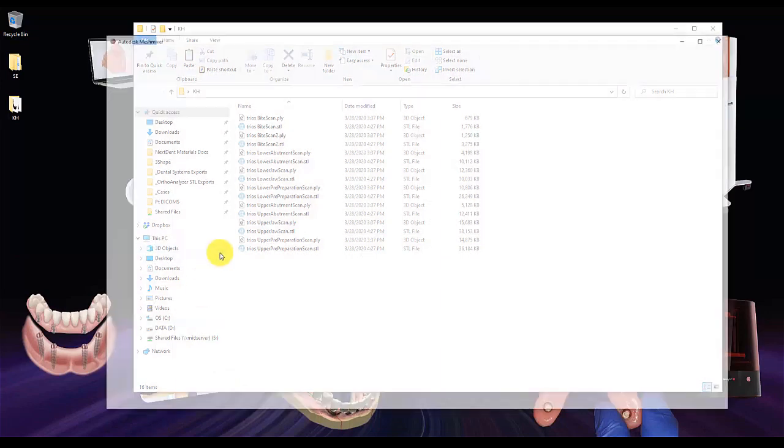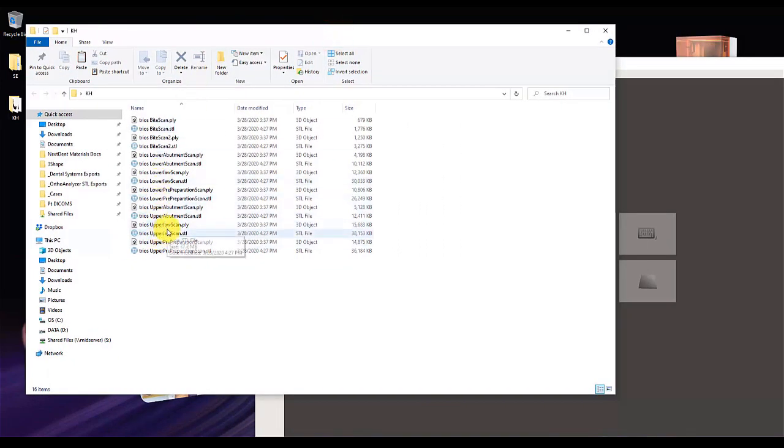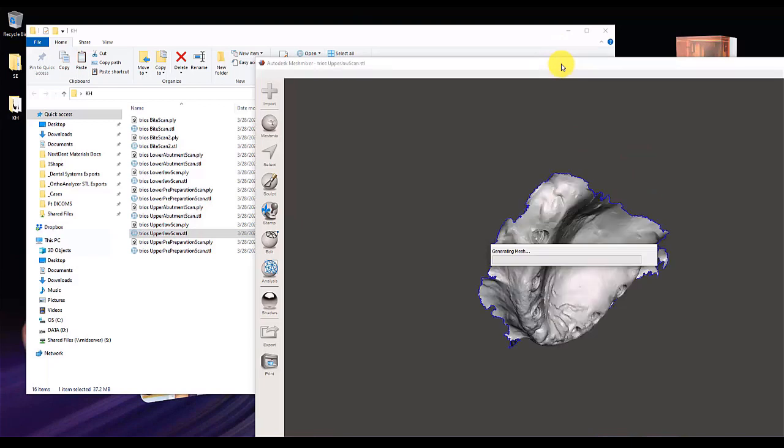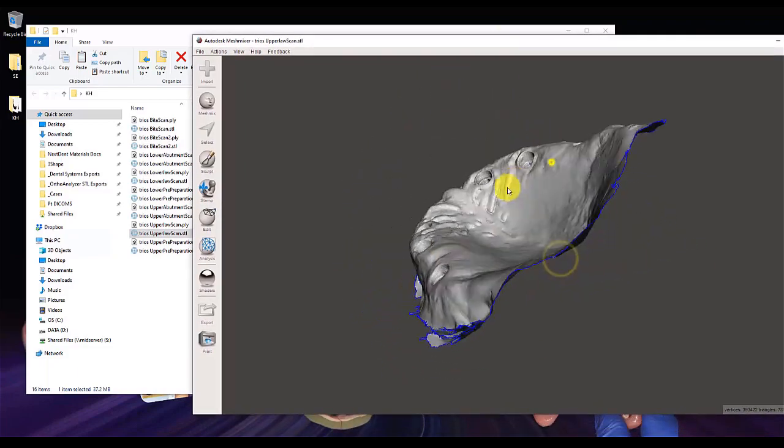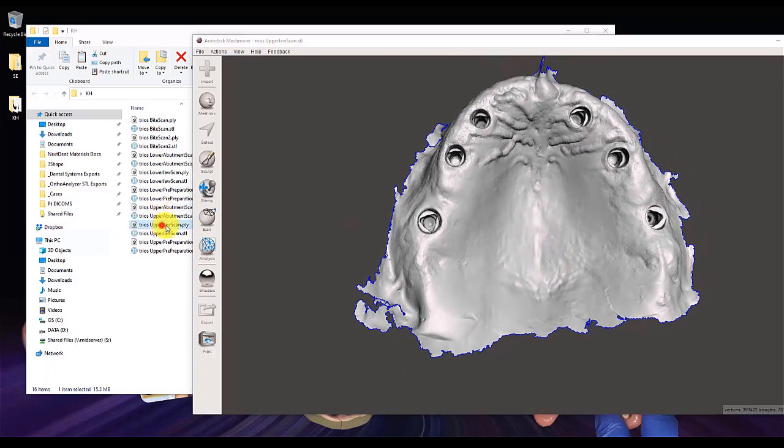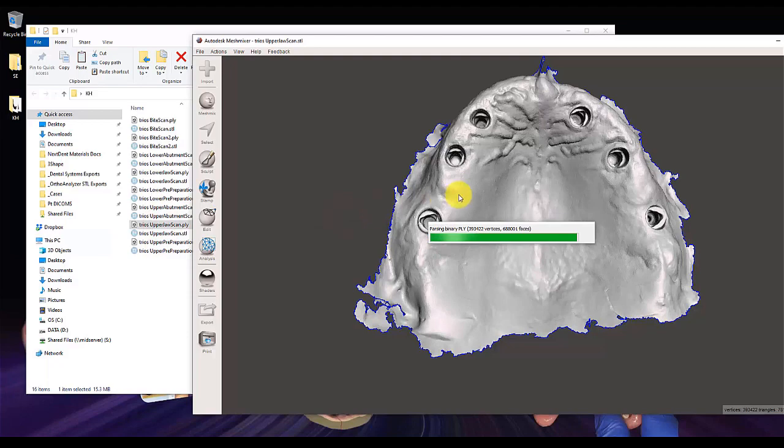I'm going to go ahead and open up a MeshMixer application, and let's drag in our upper jaw scan. So I'll bring in the STL file format of this patient. And here's our STL file. So it looks pretty good, looks pretty clean. Let me go ahead and drag in our PLY, and I'm going to append it to MeshMixer, so that way I can compare the differences between the two.